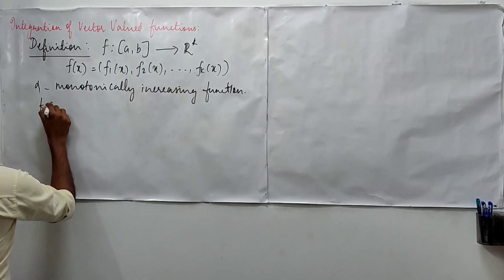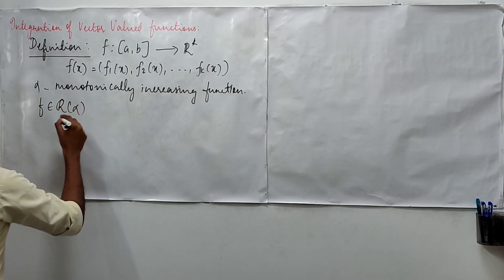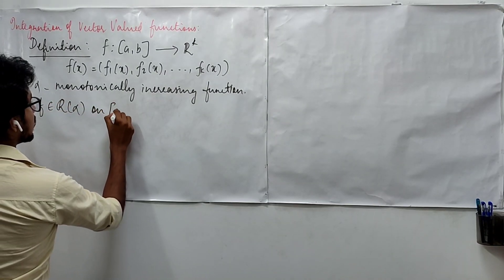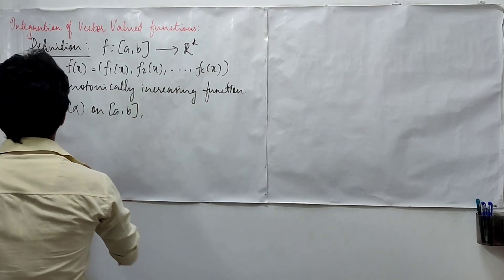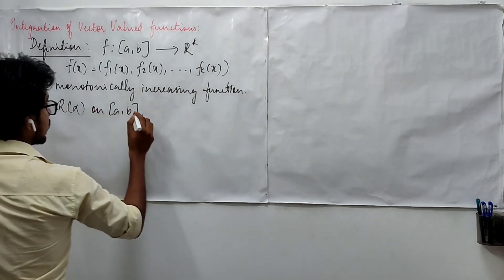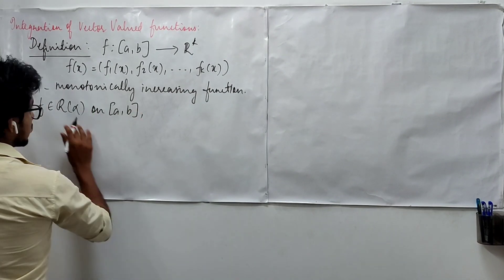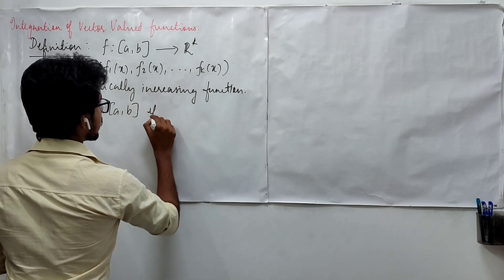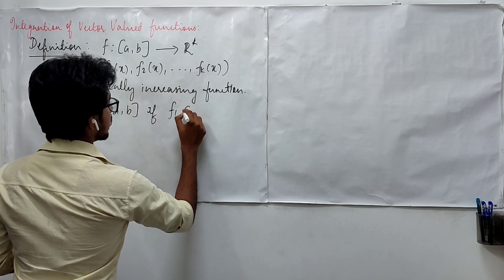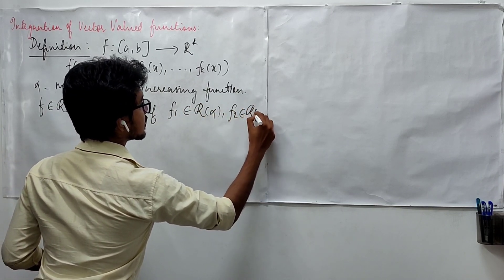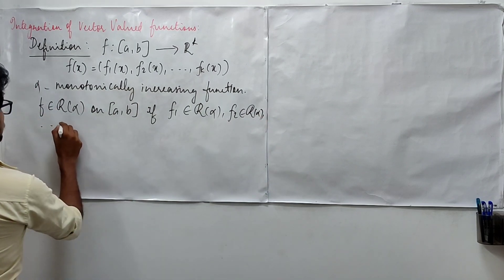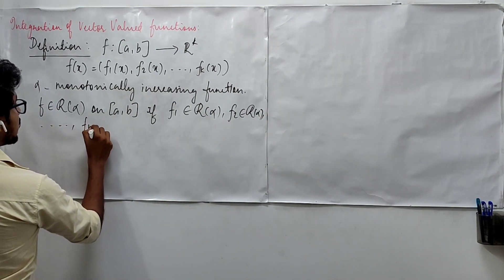Suppose if we have to say this f is Riemann-Stieltjes integrable on [a,b]. If it has to be so, it means what? This is going to happen if your f1 is Riemann-Stieltjes integrable, f2 is Riemann-Stieltjes integrable, and the same has to be true till the last coordinate.